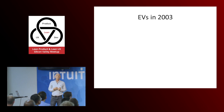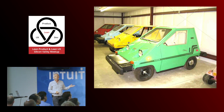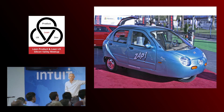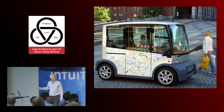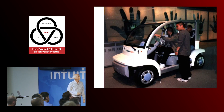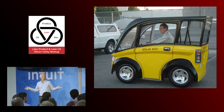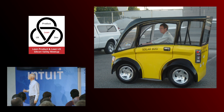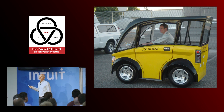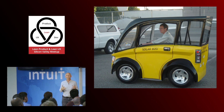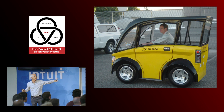We looked at that carefully and asked: why, given that our analysis showed electric cars were clearly the answer, weren't they selling? There were electric cars available in 2003. Why do you think they weren't selling? They were ugly. Martin called them 'punishment cars' — designed by people who hated the idea of people having cars, who liked bicycles and public transportation. If you had a car, you had to be punished for it. And that's what they looked like.